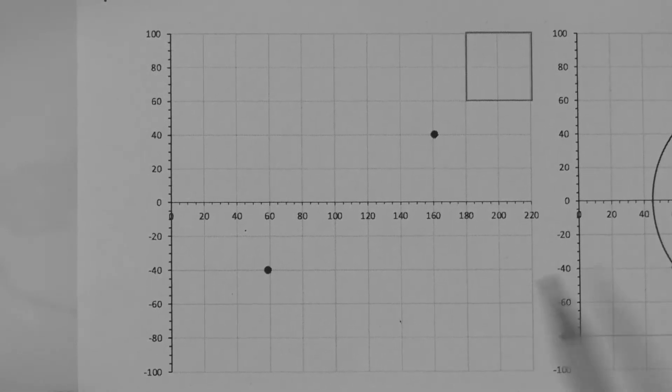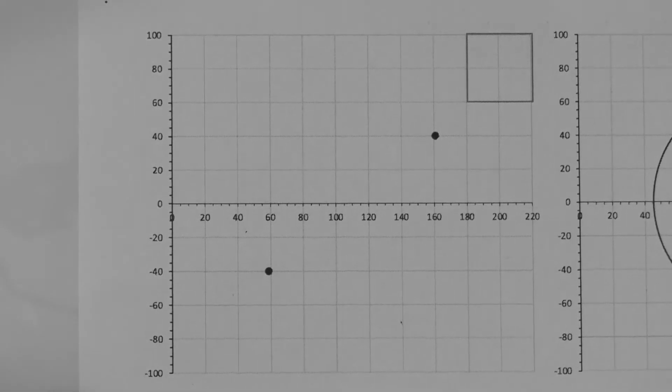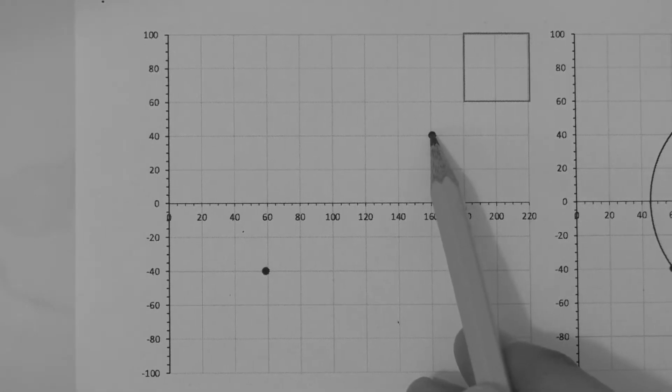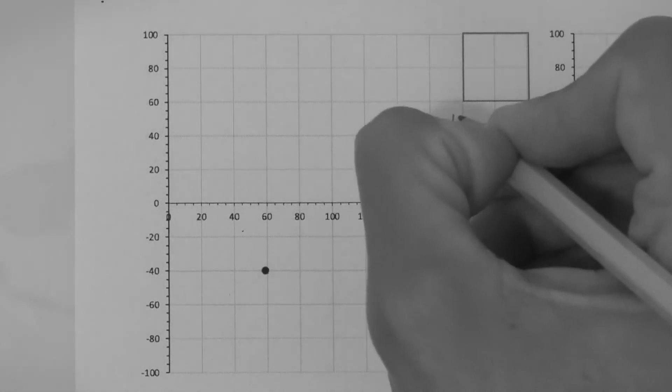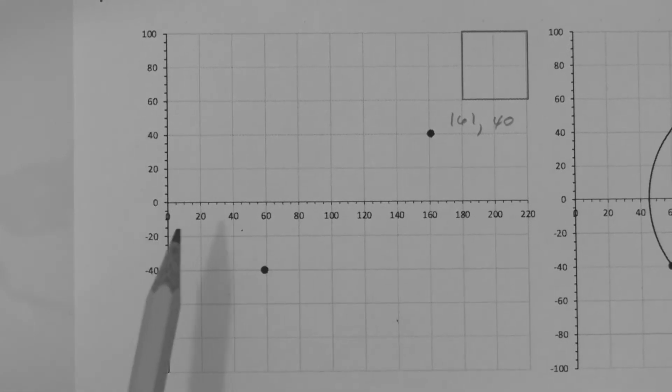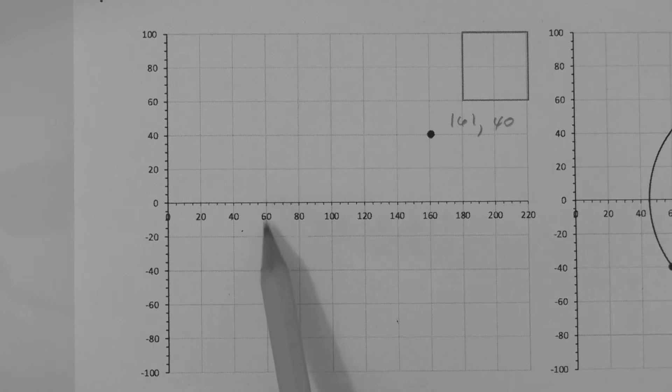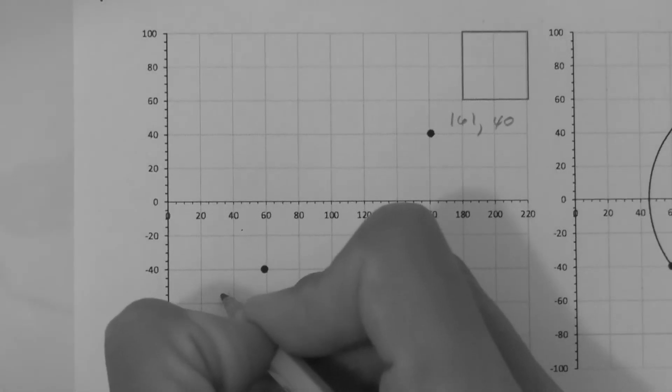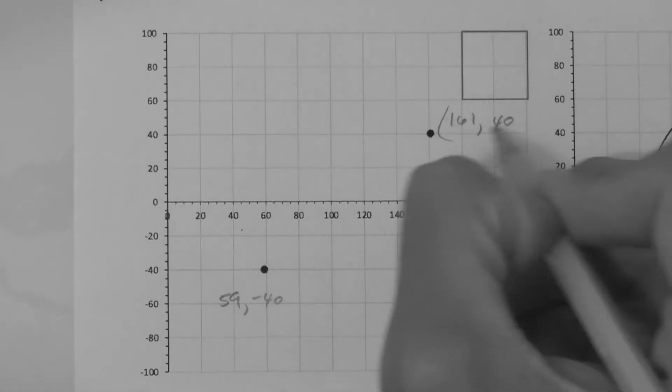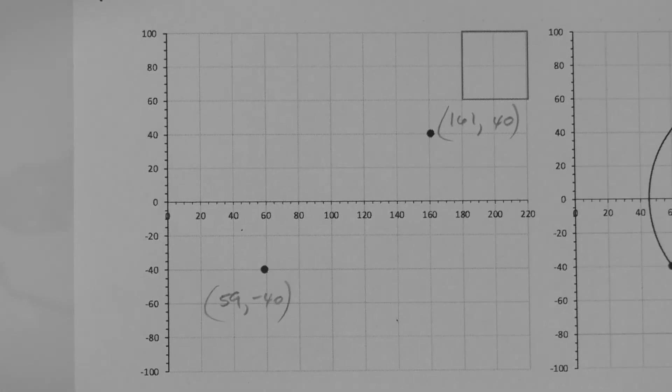So we first place two points, one for each coordinate, right? 161, 40, that's this point, and down here we have 59, minus 40.